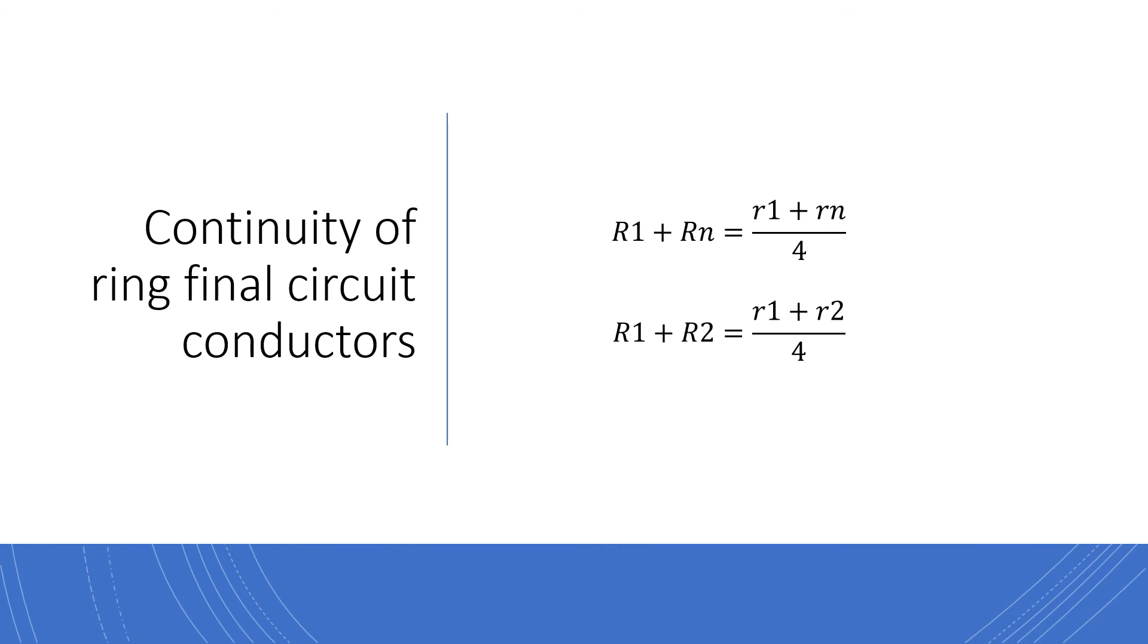So the next test is the continuity of ring final circuit conductors. As with the continuity CPC for a radial circuit the resistances are measured during an EICR however it is useful to be able to calculate them to check the results.